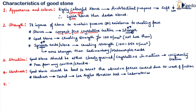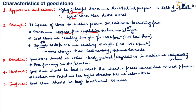The fifth property is toughness. A good stone should be tough enough to withstand stresses caused by vibrations from machinery and also from moving loads acting on the stone.